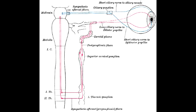What is mydriasis? Mydriasis is the dilation of the pupils. Which autonomic nervous system controls mydriasis? Mydriasis is controlled by the sympathetic nervous system.